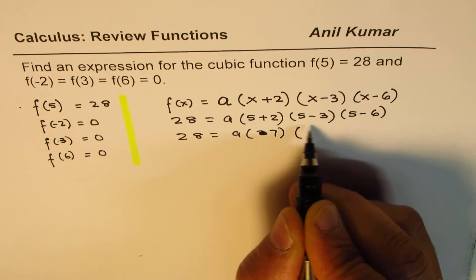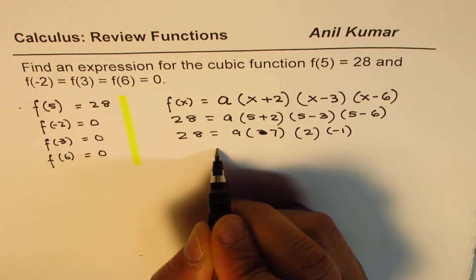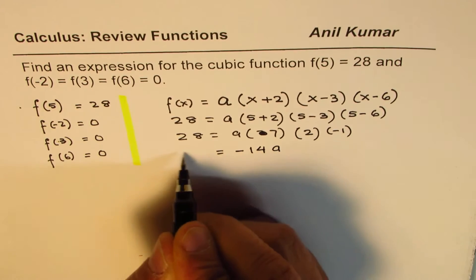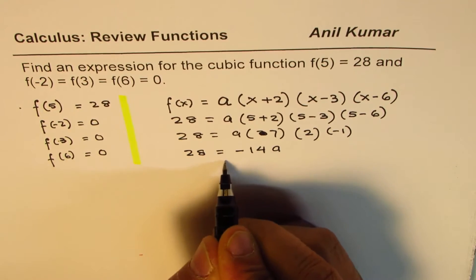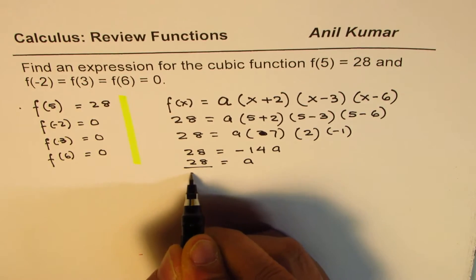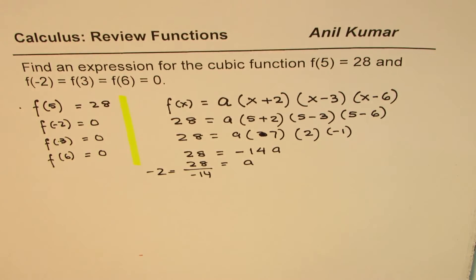And this is 5 minus 3 as 2, and this is minus 1. So that is 7 times 2 is 14, so we get minus 14a equals 28, or we get a equals 28 divided by minus 14, which is minus 2. So we get the value of a.